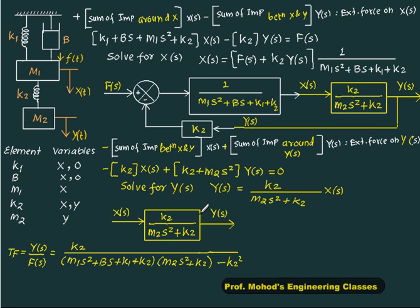So our numerator is k2, denominator is this bracket multiplied by this bracket, minus term because my feedback is positive feedback. So minus of denominator multiplied by the feedback value. The numerator is k2, the feedback is k2, so this is final answer.